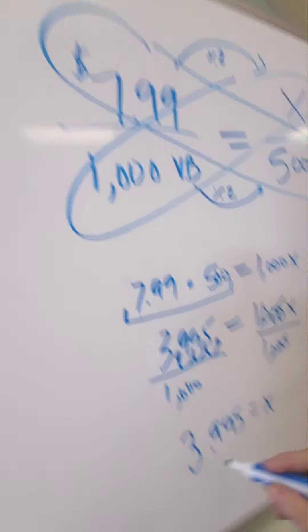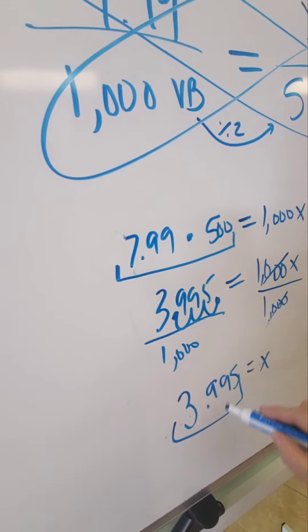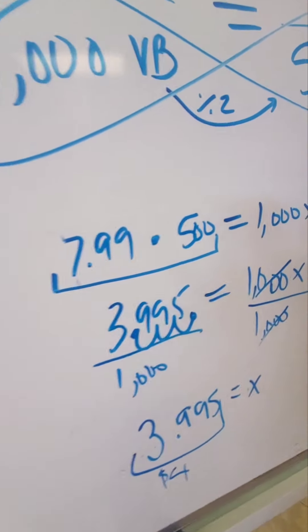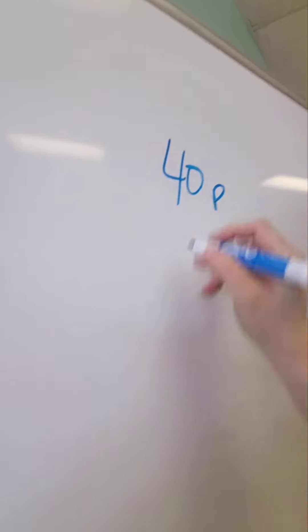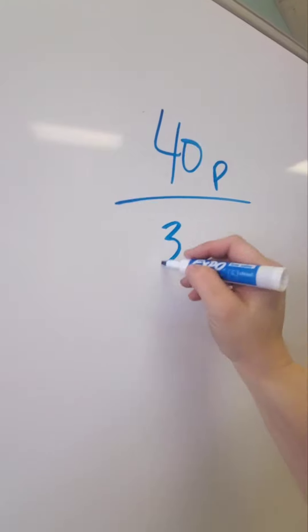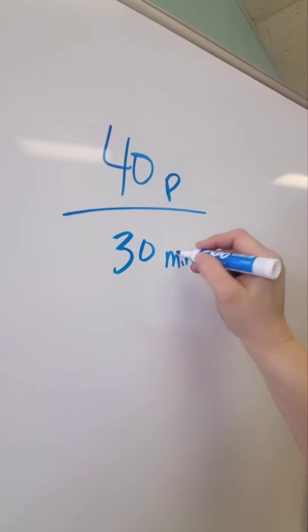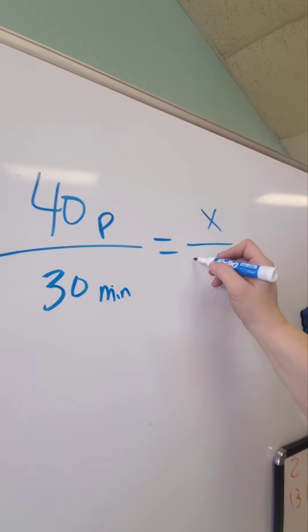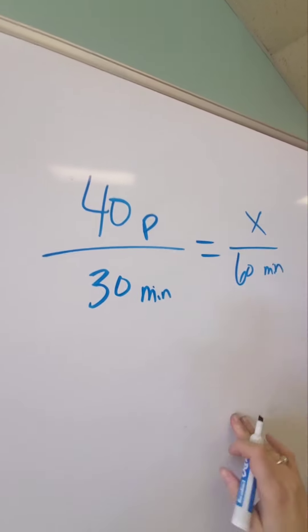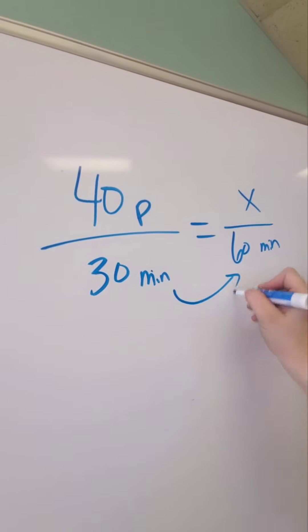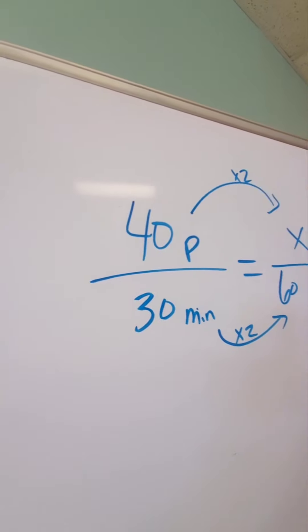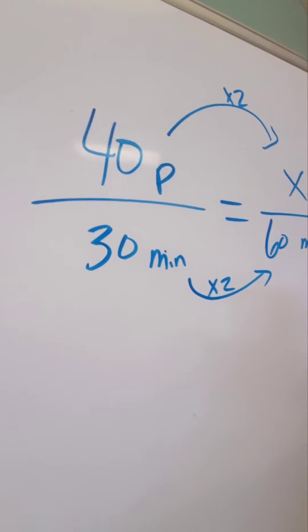So if I want half of the V-Bucks, it's going to be $3.99 — probably closer to $4. So if I can do 40 math problems in 30 minutes, because I'm super smart, I want to know how many math problems I can do in 1 hour, in 60 minutes.